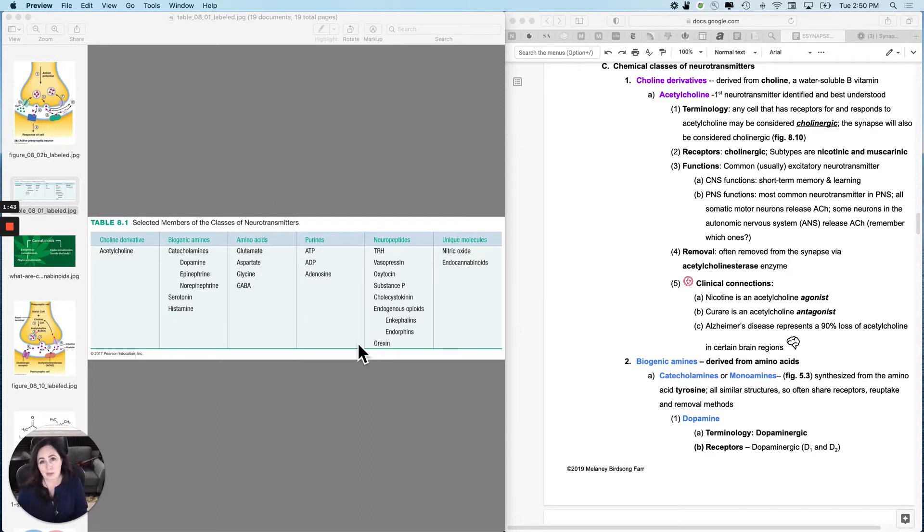Remember when you learn DNA structure, purines and pyrimidines. The A's and the AT base pair, adenosine, that's a purine, but so is adenosine diphosphate, two phosphates on it, and adenosine triphosphate, three phosphates on it. ATP is sometimes used as a neurotransmitter. And then there's a whole bunch of neuropeptides. We don't talk about all of them.